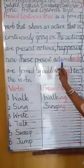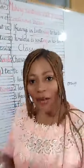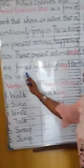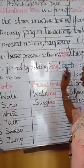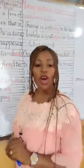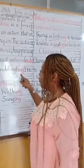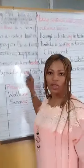These present actions are verbs because they are all actions. They are verbs. These present action verbs are formed by adding -ing to the verbs so that it will become present continuous tense. When you add -ing to the verbs, it becomes present continuous tense.